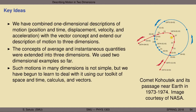Let's review the key ideas we have explored in this lecture. We have combined one-dimensional descriptions of motion — position and time, displacement, velocity, acceleration — with the vector concept developed in vectors part 1, and extended our description of motion to three dimensions. The concepts of average and instantaneous quantities have also been extended into three dimensions. We used two dimensions as an example, but everything can be repeated for three dimensions simply by adding a term with k-hat unit vector and a z component — the format for solving and describing such motions is identical.